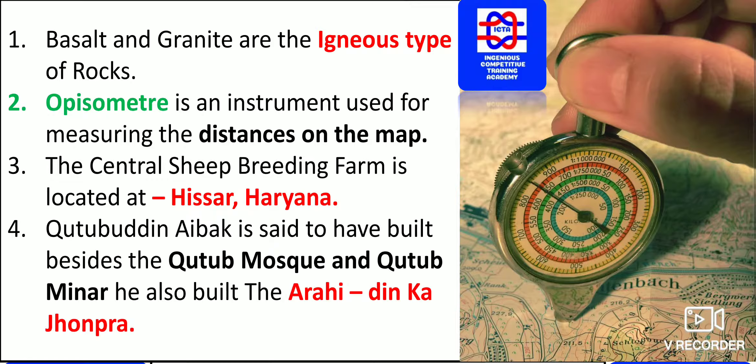The opisometer is an instrument used for measuring distances on a map. You can see on the right side how exactly the opisometer is used.